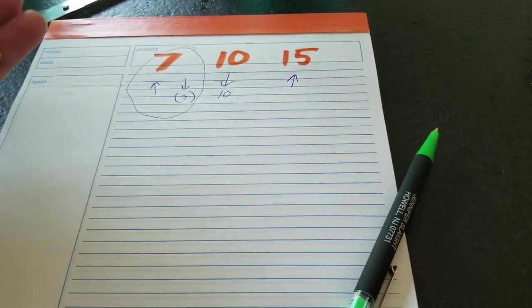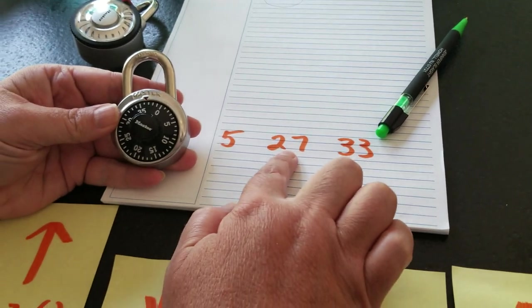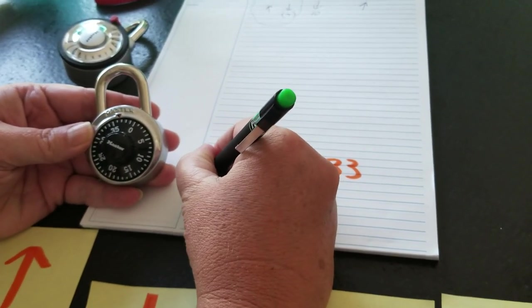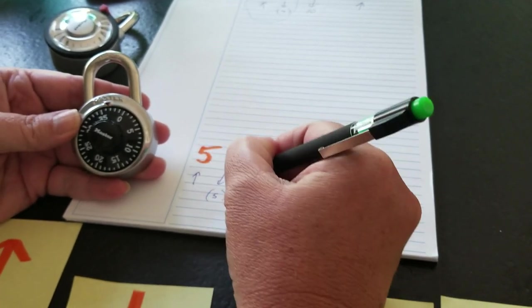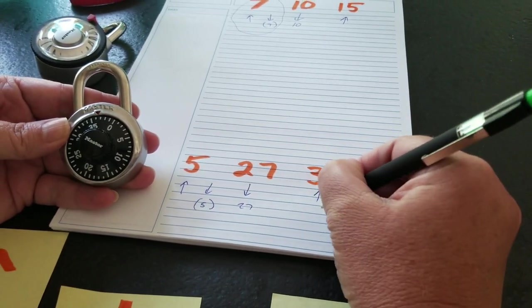So I'll do it one more time with a different lock. This lock's combination is 5, 27, 33. So we're going up to 5, we're going down past 5, down to 27, and then up to 33.